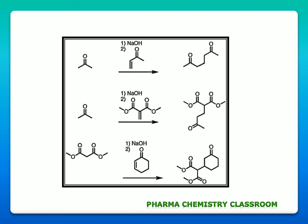A few more examples to illustrate Michael addition reaction. Here we can see a compound which is Michael donor reacting with an alpha-beta unsaturated compound in presence of a base to get a Michael addition product. From these examples you understand that Michael addition reaction cannot be stated as a particular compound X reacting with compound Y to get compound Z, because Michael donor and Michael acceptor are groups of compounds which satisfy particular criteria to become a Michael donor and a Michael acceptor.